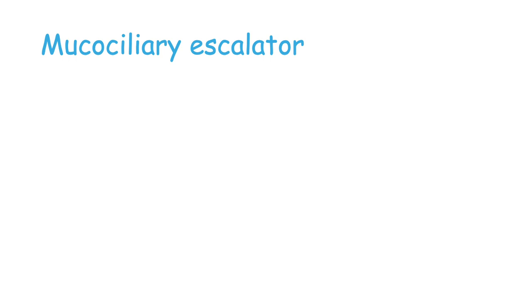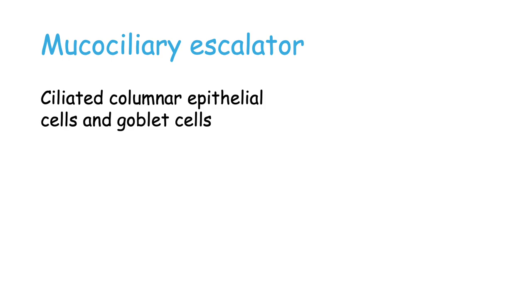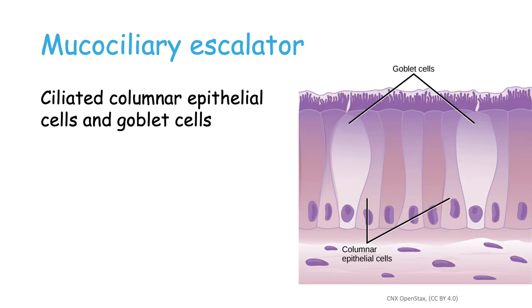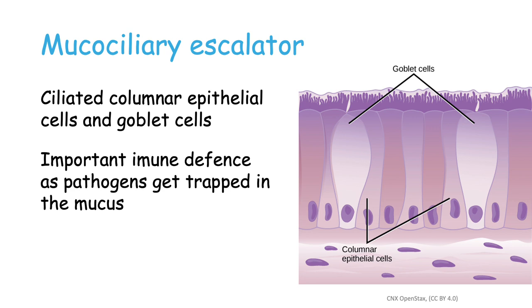This is of particular importance in the mucus ciliary escalator of the lungs. The lungs are composed of ciliated columnar epithelial cells and goblet cells. The goblet cells produce mucus, and the columnar epithelial cells contain cilia — hair-like structures that move the mucus out of the lungs. This is very important because pathogens and foreign particles become trapped in the mucus as we inspire, and the movement of cilia pushes the mucus out of the lungs to be swallowed and destroyed.